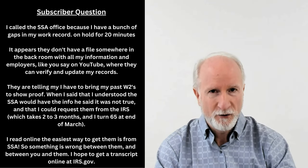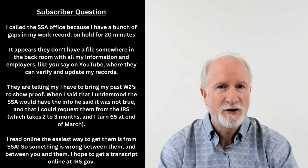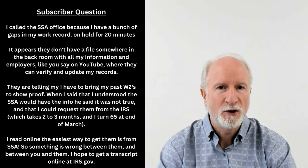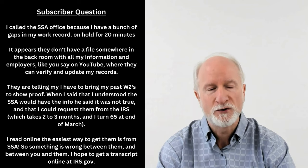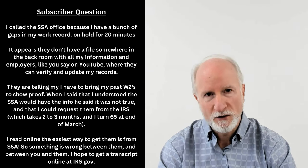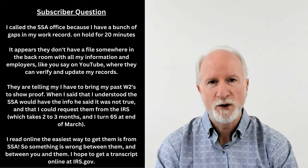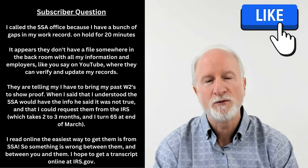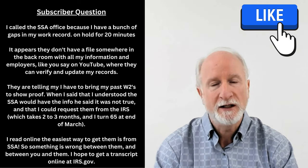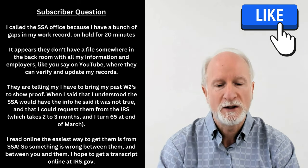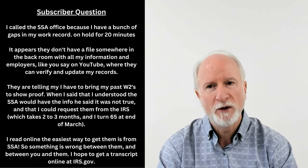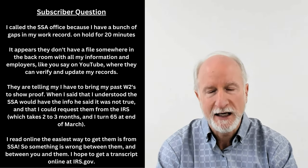If your earnings didn't get through the system and they're not in the suspense file, then unfortunately you'll have to go to the IRS, get the W-2s for that particular year, and provide them to Social Security. They will then update your record. It's pretty easy to update records once you have that information or if they're able to find it in the suspense file.